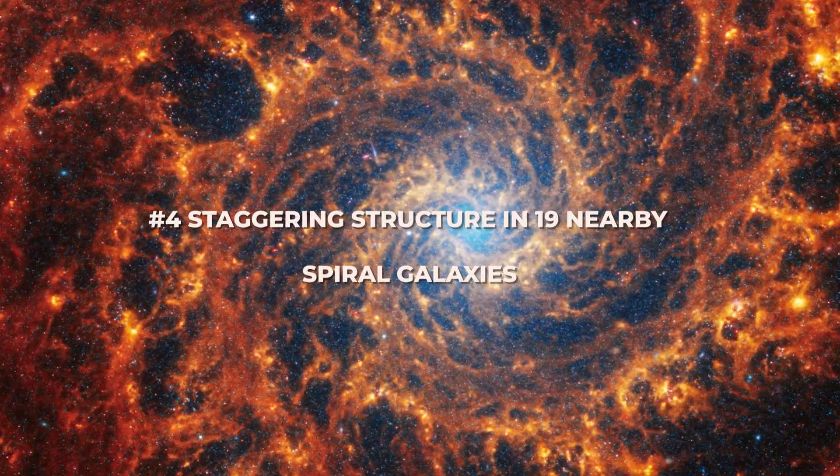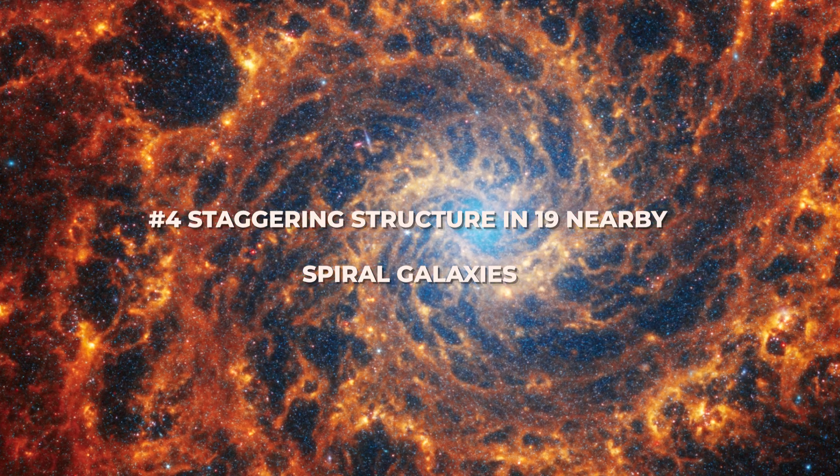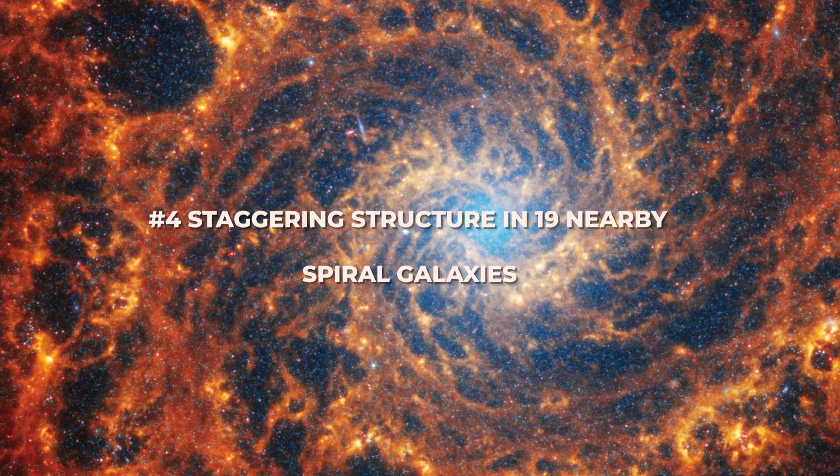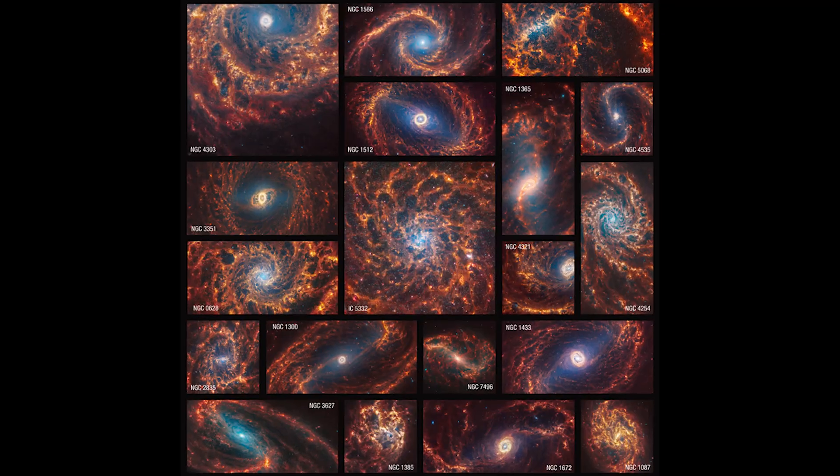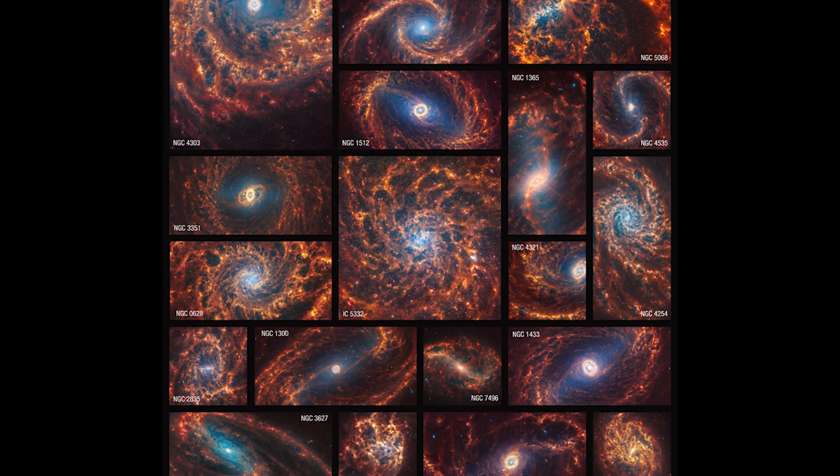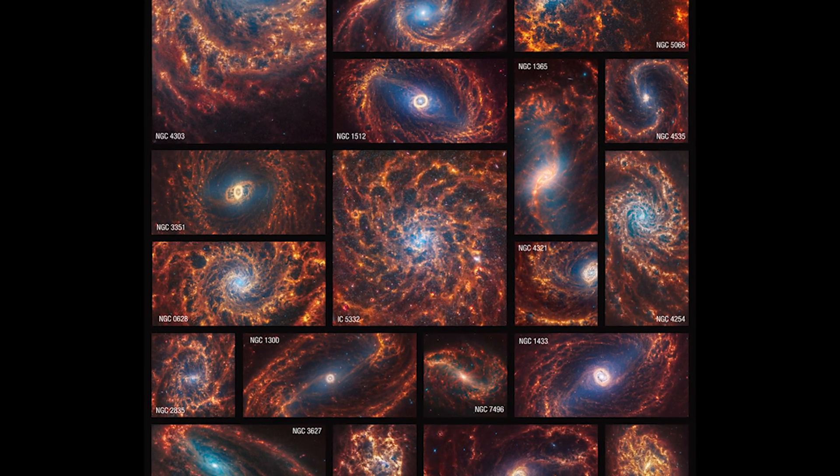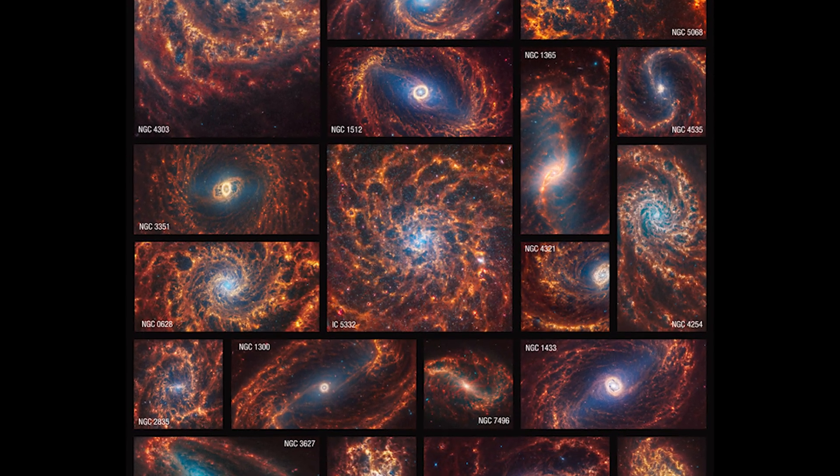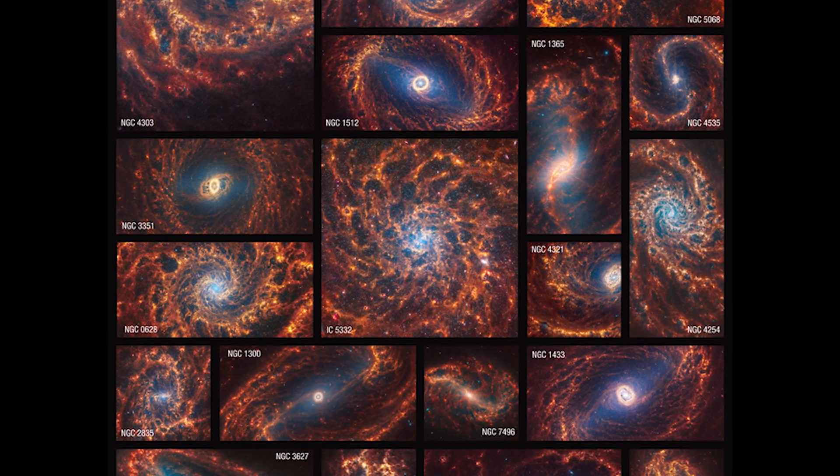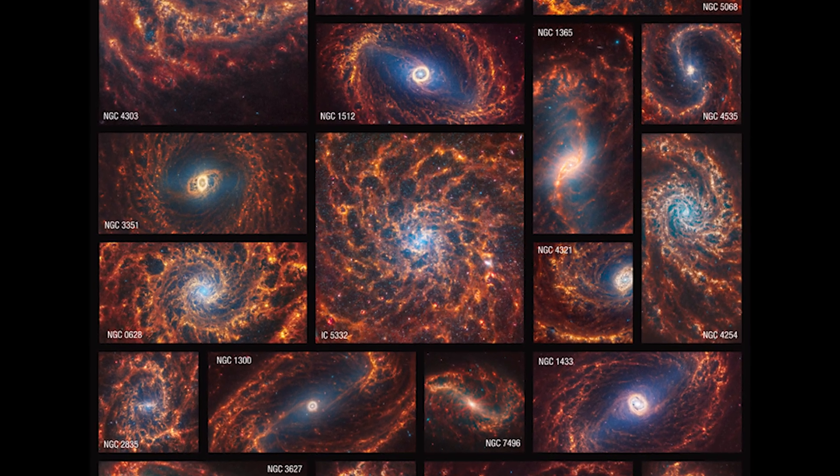Number 4: Staggering structure in 19 nearby spiral galaxies. Exciting new images of 19 face-on spiral galaxies in near and mid-infrared views showed gas, stars and dust at the most minute sizes ever seen outside our galaxy.